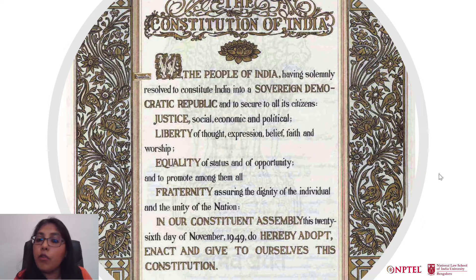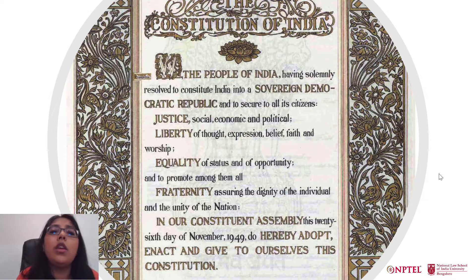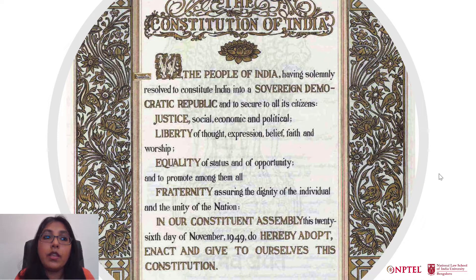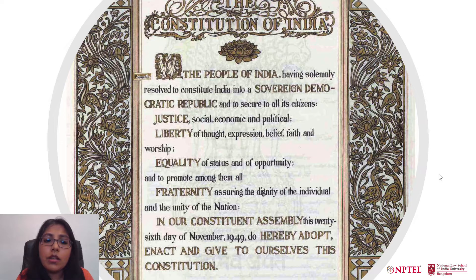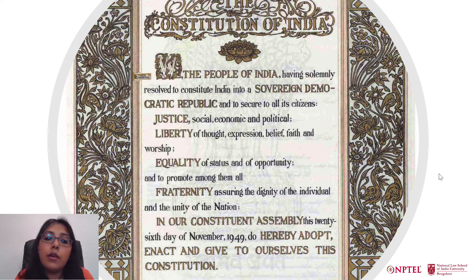If you're familiar with the current text of the constitution, you might notice some key words are missing from this framing. The current preamble reads 'sovereign, socialist, secular, democratic Republic' — the words socialist and secular were added by the 42nd amendment in 1976, during the emergency. There has been some recent controversy about whether the fact that the original constitution did not contain the word 'secular' means India was not constituted as a secular state. In fact, in the Constituent Assembly there was discussion on including the word secular, and the reason it was rejected was because the constitution was so self-evidently secular that there was no need to put the word right at the beginning.